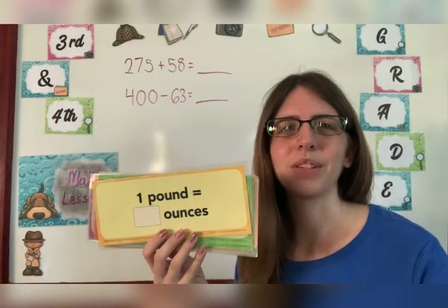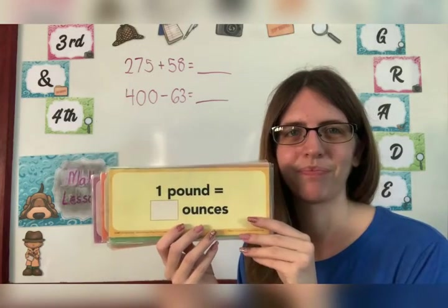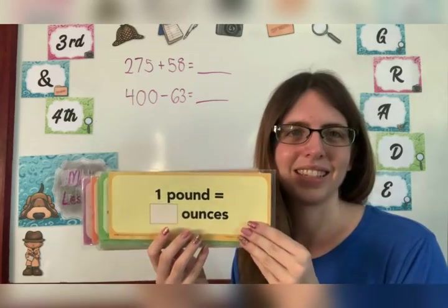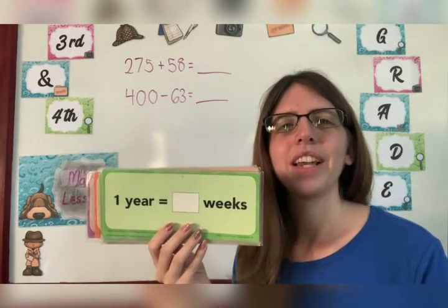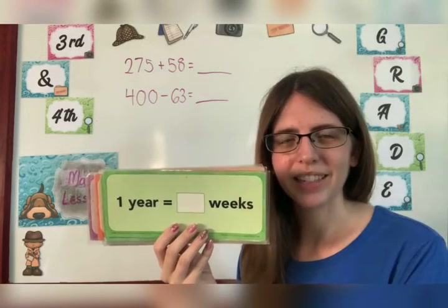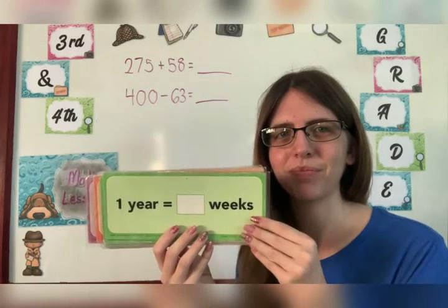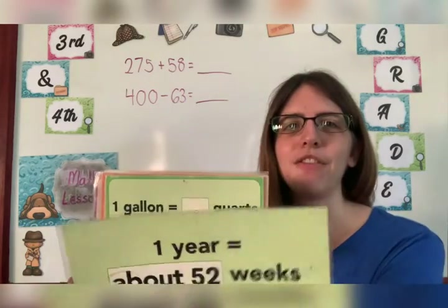One pound equals how many ounces? Sixteen ounces. One year equals how many weeks? About fifty-two.